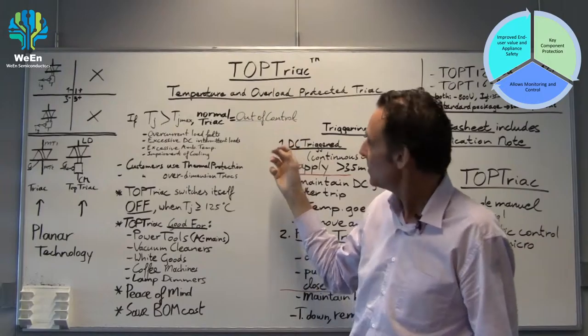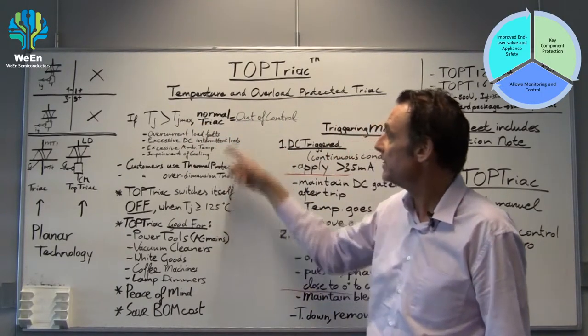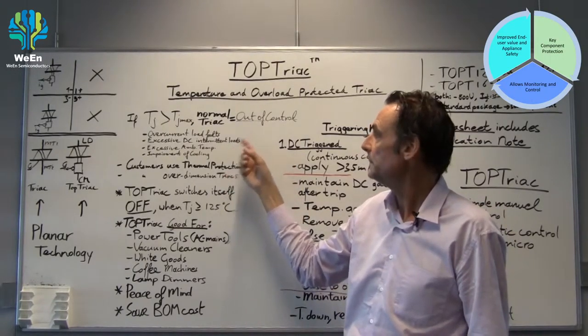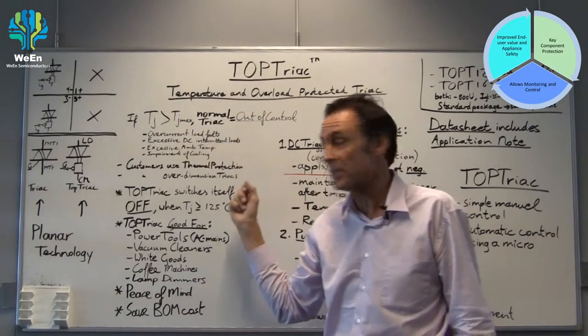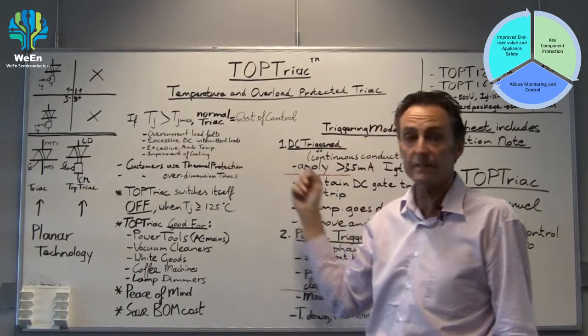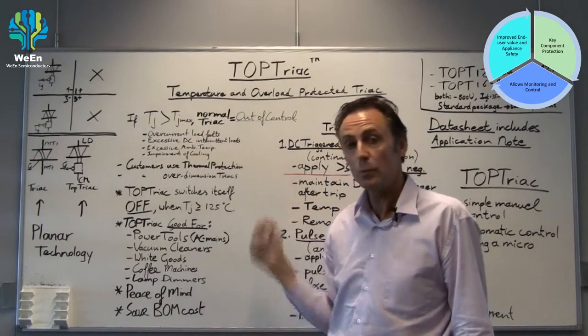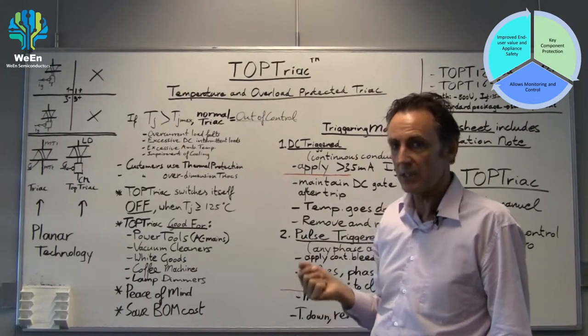In what kind of cases would you have a too high junction temperature of a TRIAC? For instance, if you have a load fault and there is a too high current, or if you have intermittent loads and you have an excessive duty cycle, or there is a very high ambient temperature, or there is a problem with your cooling. In all such cases the temperature can get too hot.